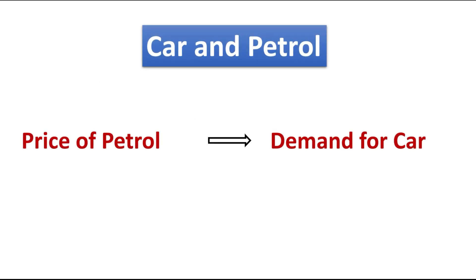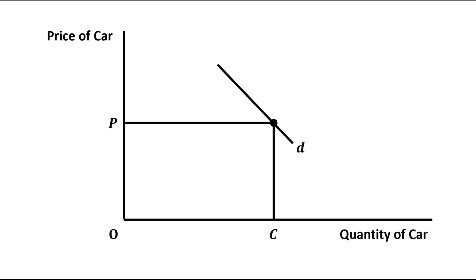We are taking an example of car and petrol. Suppose that the price of petrol is increased — in that case, the demand for car will be decreased. If the price of petrol is increased, then definitely the demand for car will be decreased. Let us see the graphical representation of this.